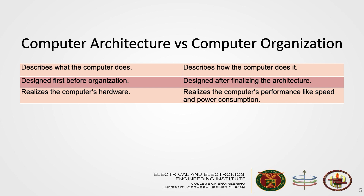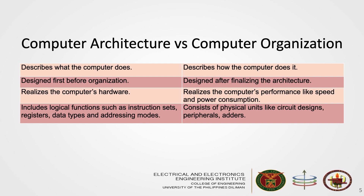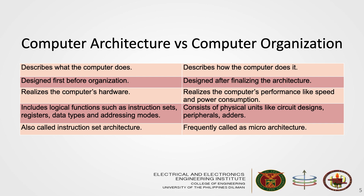Computer architecture includes logical functions such as instruction sets, registers, data types, and addressing modes, while computer organization consists of physical units like circuit designs, peripherals, and others. Computer architecture is also called instruction set architecture, while computer organization is frequently called micro-architecture. Based on this table, we get that computer organization is based on its architecture.